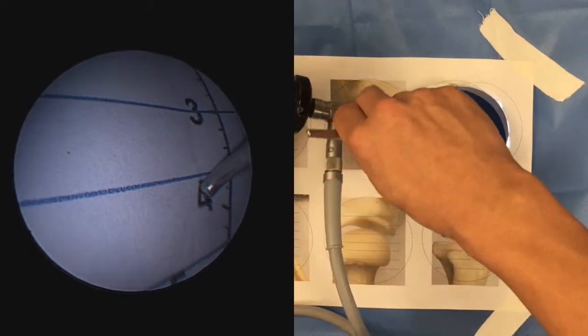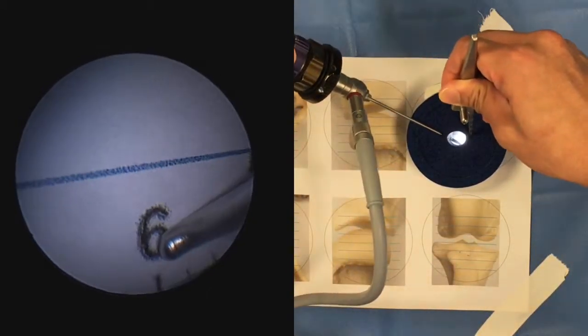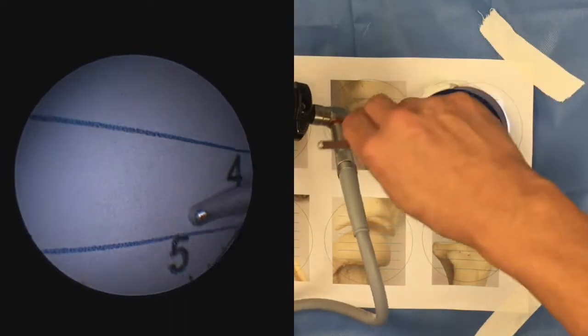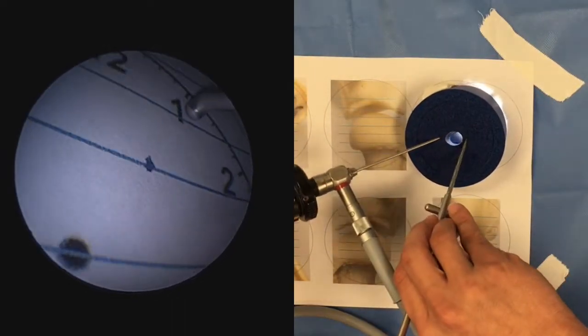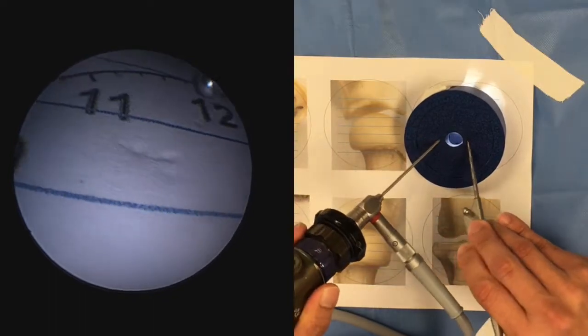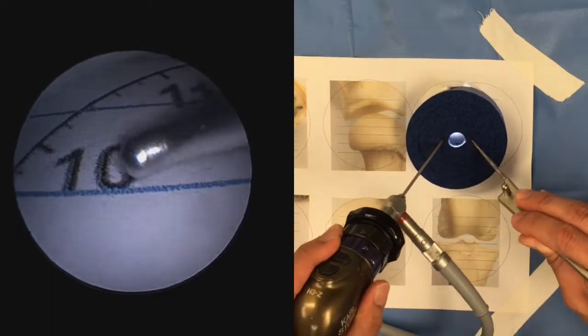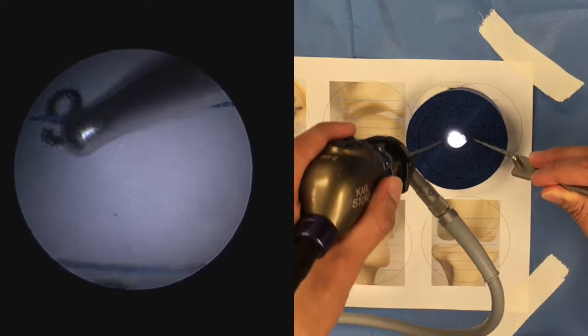Now what we would like you to do is to probe each number. This is obviously going to involve moving the arthroscope to change the field of view to find each number, and we're following the field of view with our probe tip. Remember to keep those blue lines nice and horizontal.